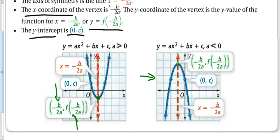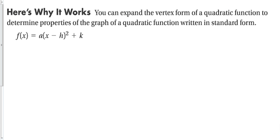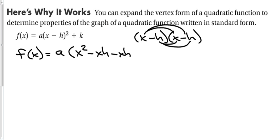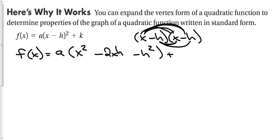Let's see where -b/(2a) actually comes from. If we look at the formula in vertex form, we can expand it to determine the properties of a graph written in standard form. We square (x - h) by multiplying it by itself using FOIL — x times both terms, then -h times both terms — giving x² - xh - xh + h², which combines to x² - 2xh + h², plus k on the end.